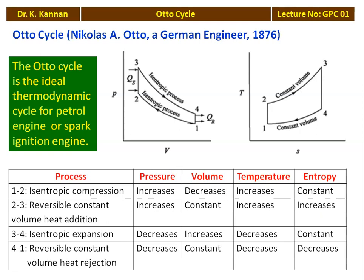Looking at what happens in each process using pressure, volume, temperature, and entropy: for isentropic compression (1 to 2), pressure increases from P1 to P2, volume decreases from V1 to V2, temperature increases, and entropy remains constant — S1 = S2. Isentropic means constant entropy.